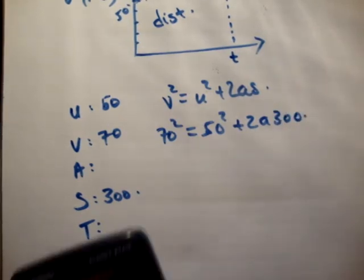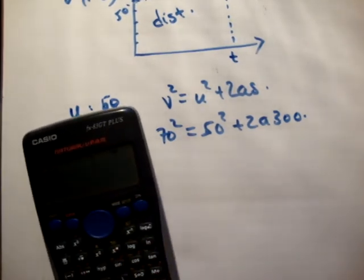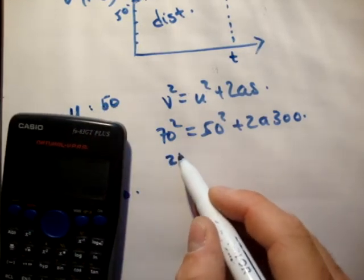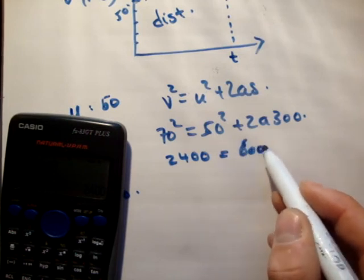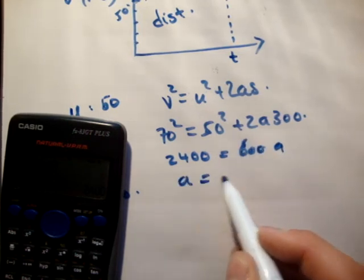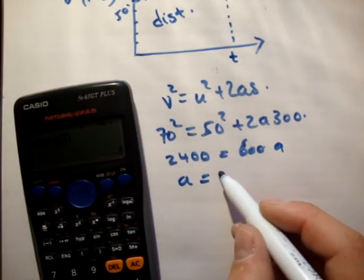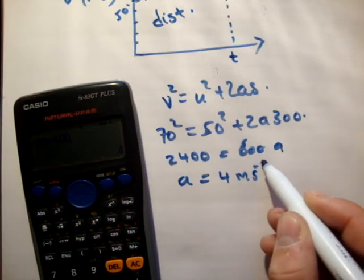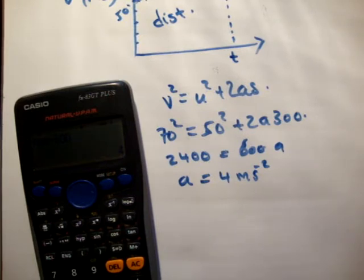So we have 70 squared equals 50 squared plus 2 times a times 300. Let's pull out the calculator and solve this. So we go 70 squared minus 50 squared equals 2400 equals 600a. Therefore a equals 2400 divided by 600 equals 4 meters per second squared. Check that with the back of the book to see if we're correct. And 4 meters per second squared is correct.